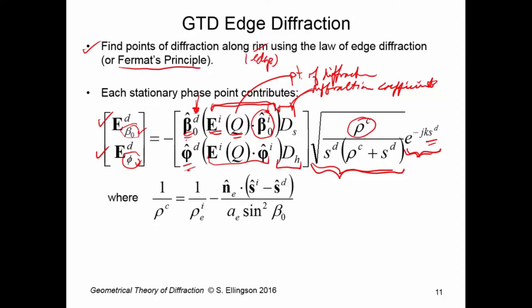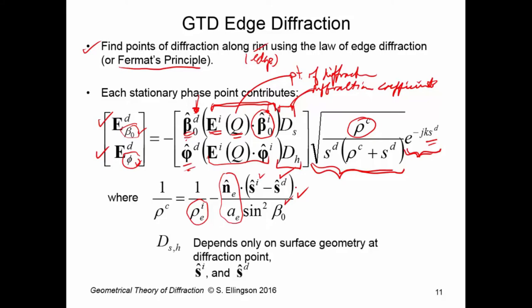The distance rho superscript C is a caustic distance, given by an expression I'll explain in more detail later. It describes wavefront curvature, which depends on the incident wavefront curvature, the geometry of the rim, the directions of incidence and departure, and the angle beta-naught to the rim. D sub S and D sub H are the diffraction coefficients — they depend only on the surface geometry at the diffraction point. S superscript I and S superscript D are the respective distances.